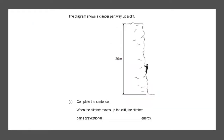Next question. The diagram shows a climber partway up a cliff. Complete the sentence: when the climber moves up the cliff, the climber gains gravitational something energy. So gravitational potential energy is the answer because it is stored in the person since he is not on the ground — we can't see the gravitational potential energy. And that will give you one mark.